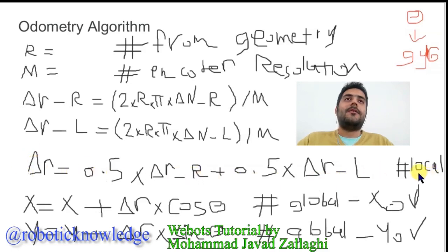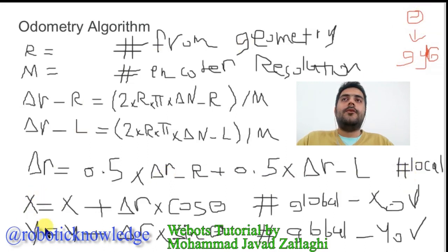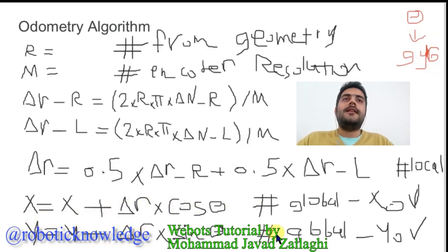This measurement is local. To have a global measurement, you have to convert it using the angular state of the mobile robot. So you can update the position of the robot: x equals x plus delta r times cosine of theta, and y equals y plus delta r times sine of theta. This update is based on an initial position for your mobile robot.